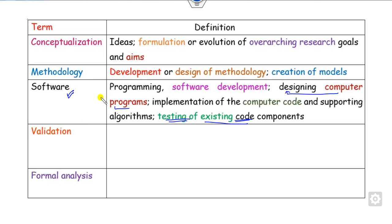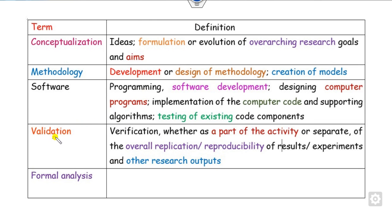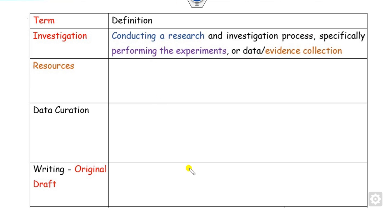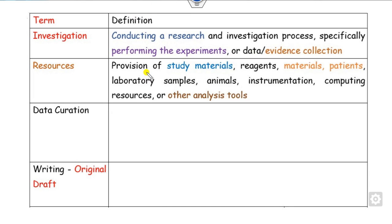Validation: once results are complete, whoever verifies, replicates, or compares results with other outputs is listed under validation. Formal analysis: whoever applies statistical techniques, computation analysis, or synthesizes data is listed under formal analysis. Investigation: whoever conducts the research, performs experiments, or does data collection is listed under investigation. Resources: whoever provides study materials, samples, or analysis tools is listed under resources. Data curation: whoever manages or produces data, including software code, is listed under data curation.